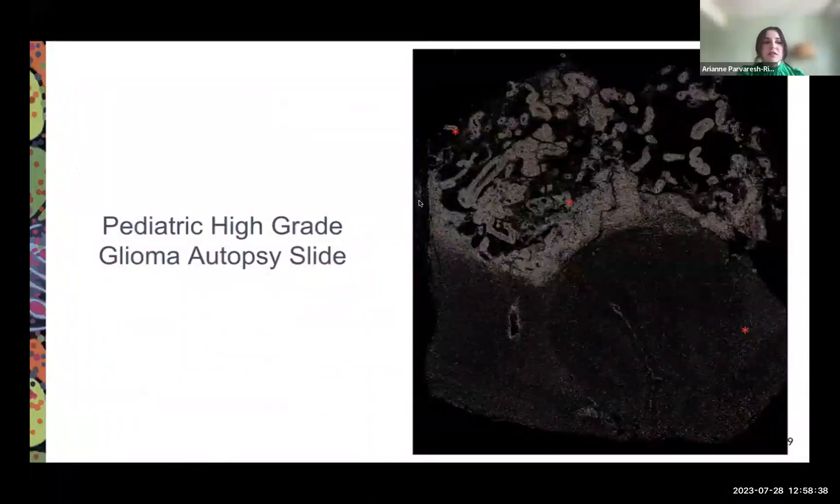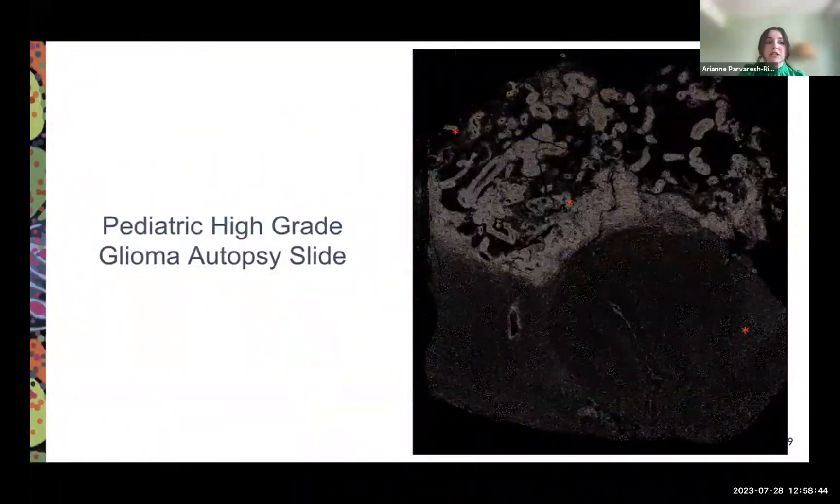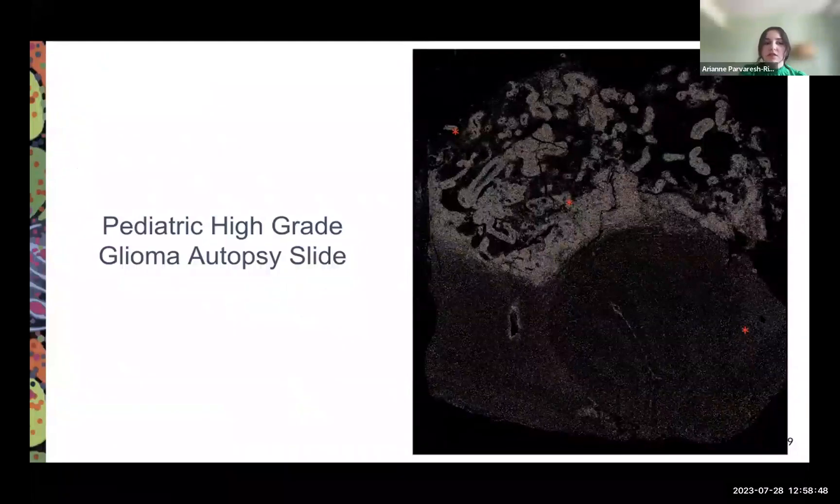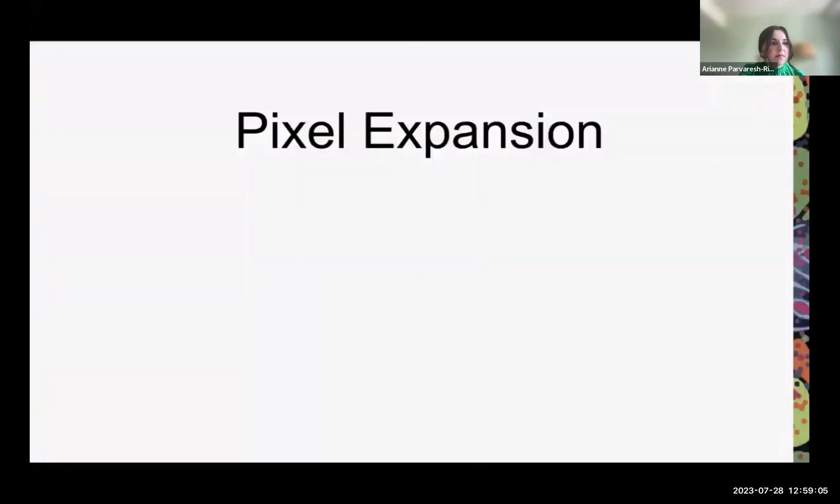For the purposes of this presentation, I'll be presenting a pediatric high-grade glioma autopsy slide that was imaged at the TAN Lab. I'll be representing three regions from this slide. I basically focused on testing three different parameters that MESMER offers: maxima threshold, interior threshold, and pixel expansion, to see how accurately it performs cell segmentation on the slides we have at the TAN Lab.